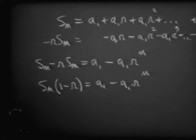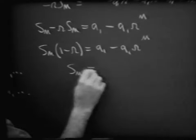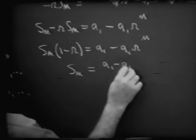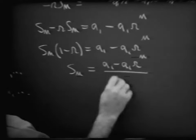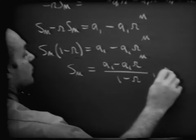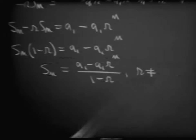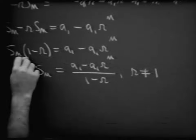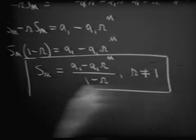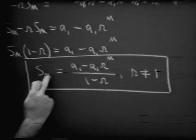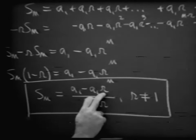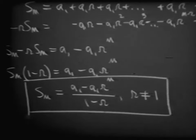Dividing both sides by 1 minus R, we get S sub n equals (A sub 1 minus A sub 1 times R to the n) divided by (1 minus R), where R cannot equal 1. There is our formula giving us the sum of the first n terms when we know the first term A sub 1, the common ratio R, and the number of terms.